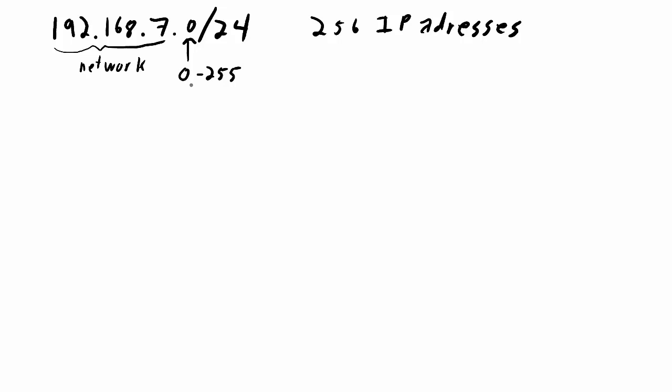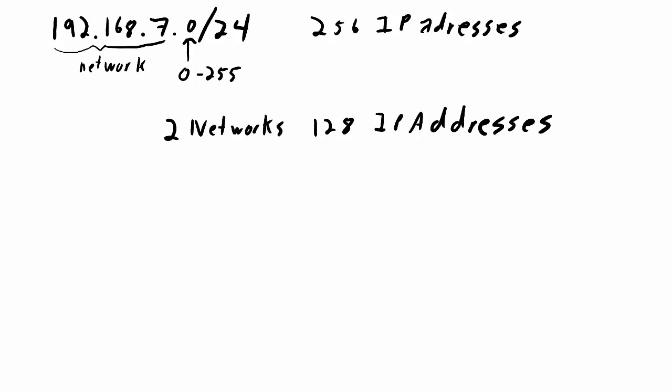Now let's say I want to split this up into two networks. I can do this very simply by dividing this network in half, where each network will then have 128 IP addresses. I'll end up with two different networks, each with 128 IP addresses.